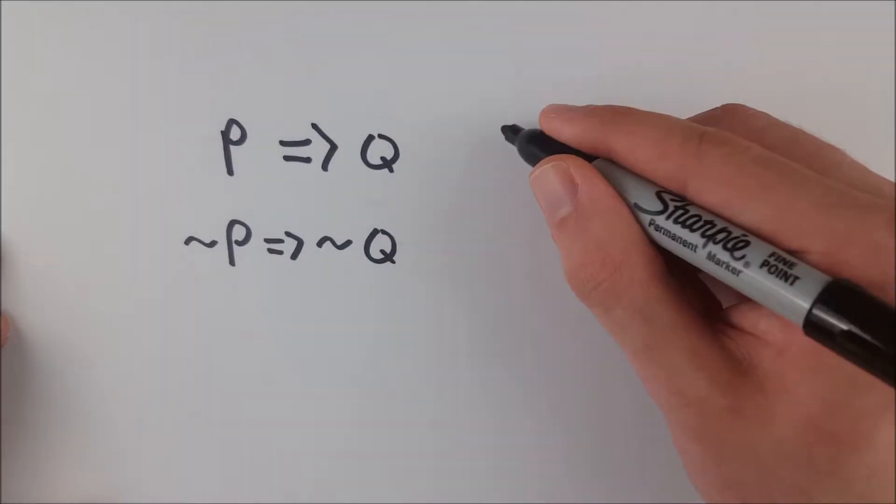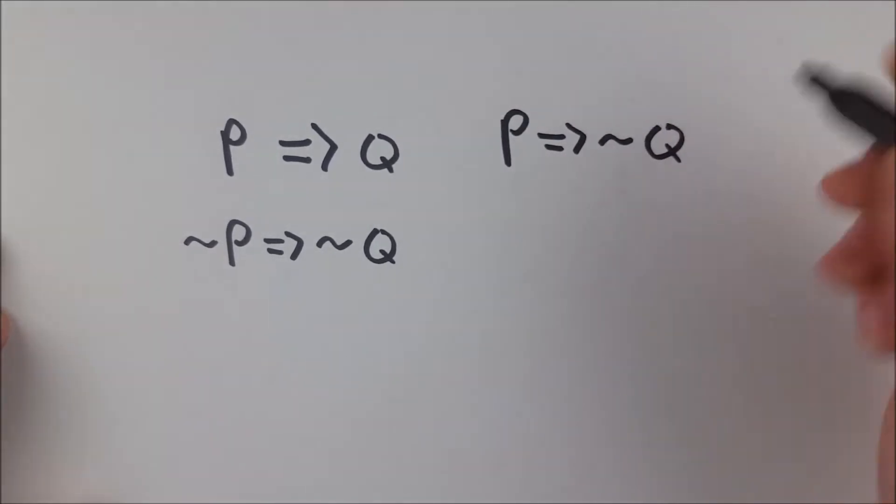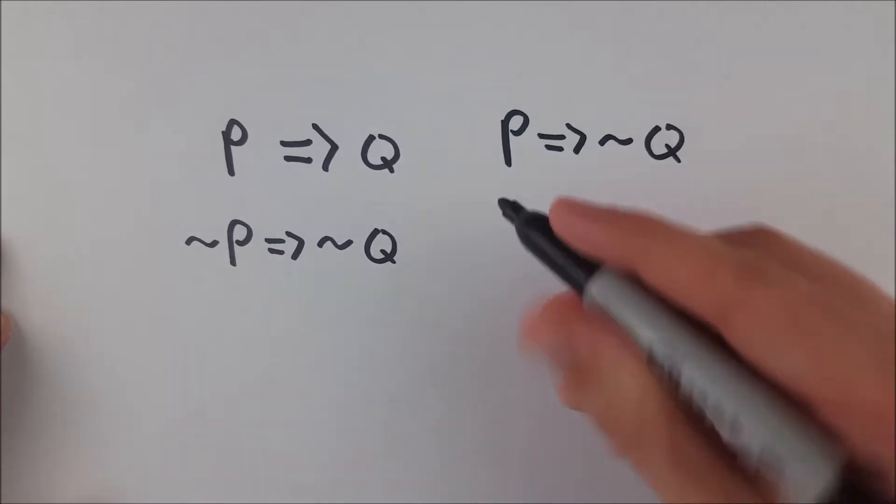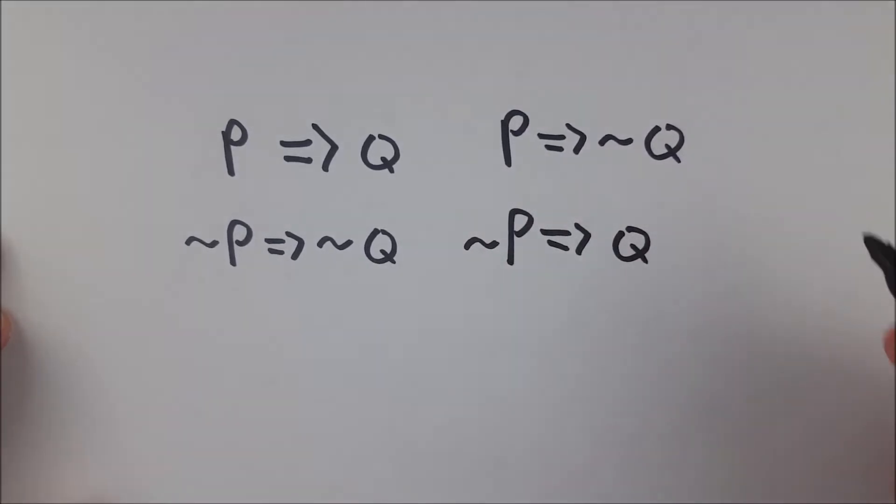Similarly, if we had a statement P implies not Q, then the inverse of this statement is just not P implies Q. It works just like multiplying by a negative.